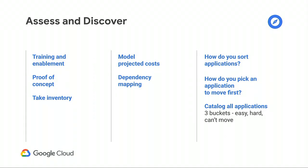Speaking of the assessment phase, let's talk about what happens during assessment and discovery. There's enablement and training — GCP is a new platform, you might need new tool sets and skill sets, and you might want to do some proof of concept. You take inventory of applications, workloads, servers, licenses, and operating systems. You start thinking about costs, especially if you move from on-prem — it's a different financial model. You do dependency mappings between applications and workloads, and then start thinking about how you catalog applications and which ones you're going to move first to the cloud.